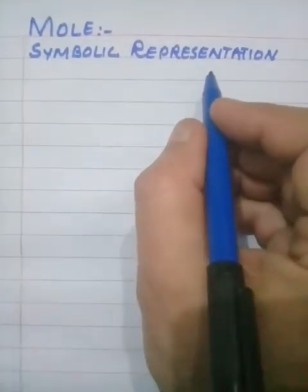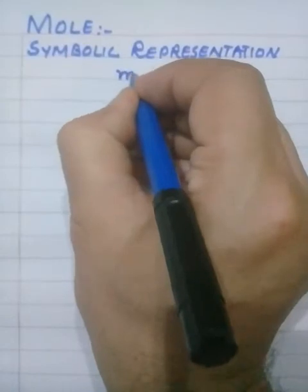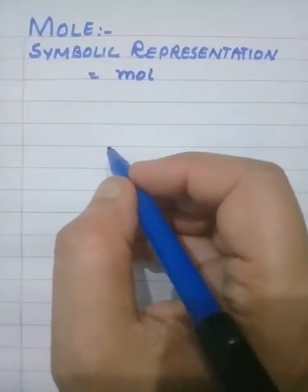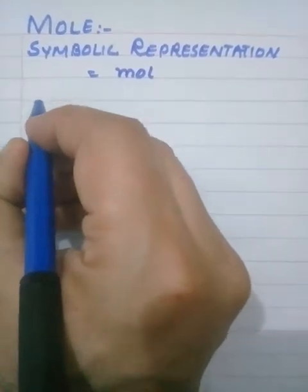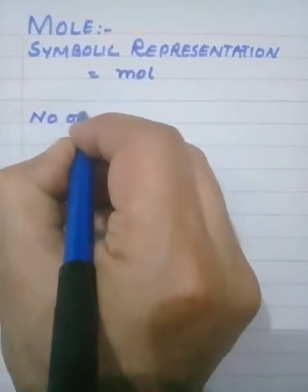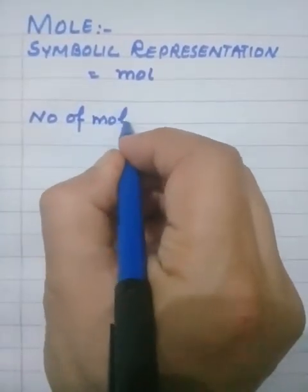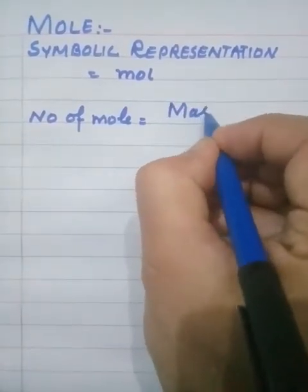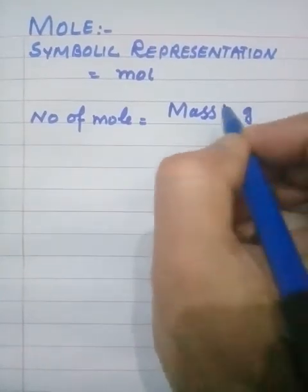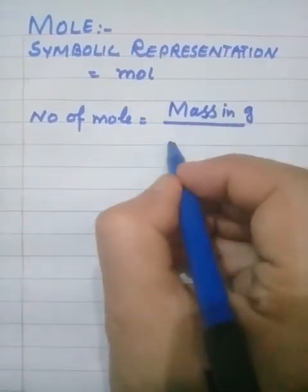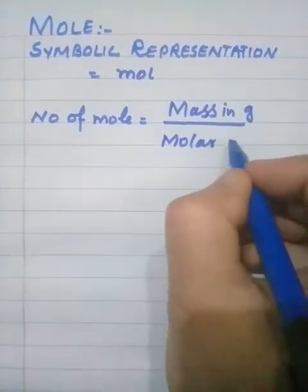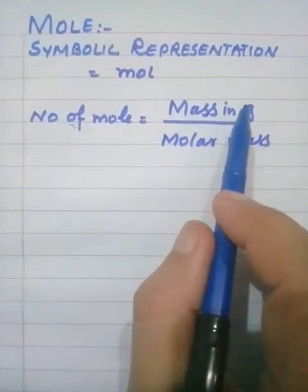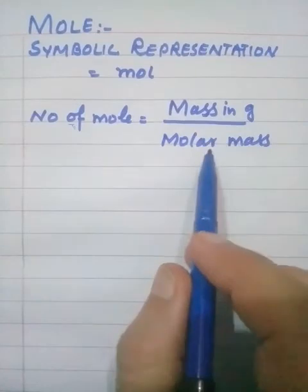The symbolic representation of mole is written as 'mol'. Mathematically, we represent mole as: number of moles = mass in grams ÷ molar mass. The given mass divided by the molar mass gives us the number of moles.